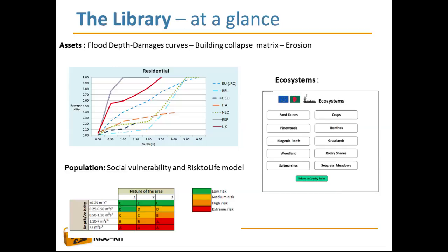For the population, methodologies are also proposed to develop social vulnerability indicators, as well as risk-to-life vulnerability indicators. The way of assessing vulnerability for ecosystems varies from one ecosystem to another. Therefore, the library provides different methods and indicators considering different types of coastal ecosystems, such as sand dunes, pine woods, woodland, salt marshes, or crops.